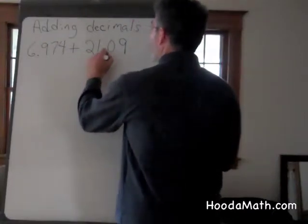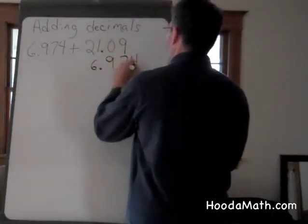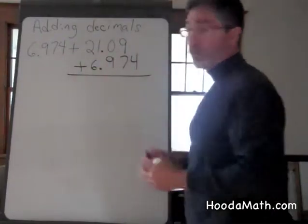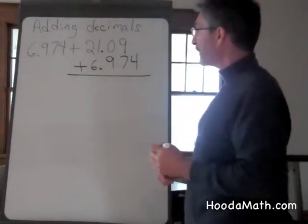Six and nine hundred seventy-four thousandths plus twenty-one and nine hundredths.